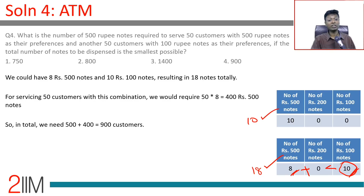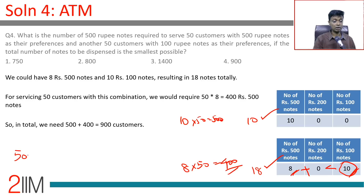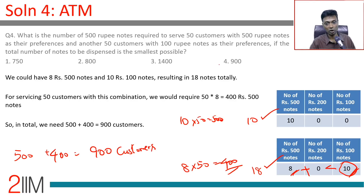Total 500 rupee notes required: 10 per person × 50 customers (500-preference) = 500 notes, plus 8 per person × 50 customers (100-preference) = 400 notes. Total 500 rupee notes = 500 + 400 = 900. The answer is 900.